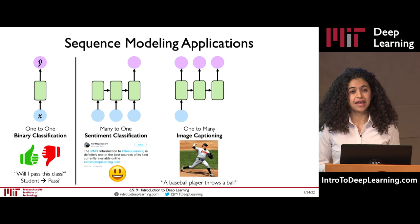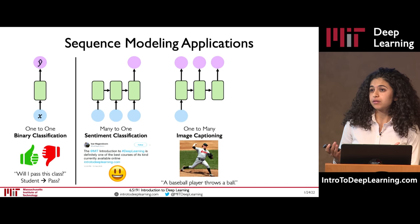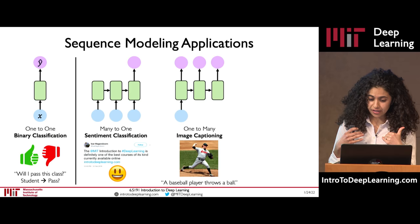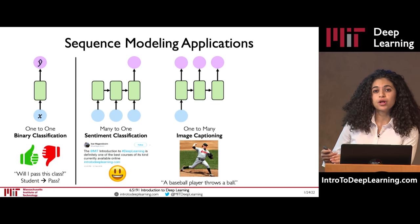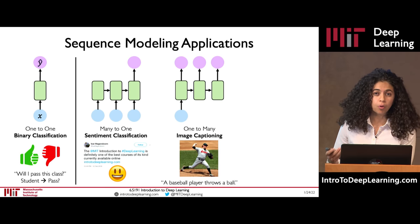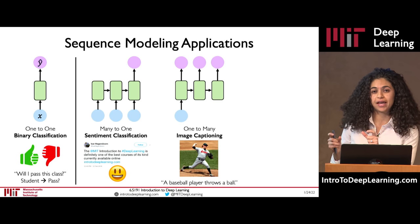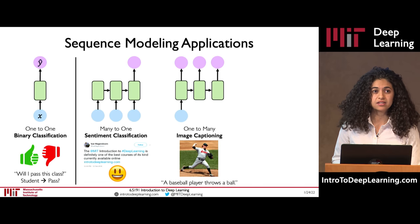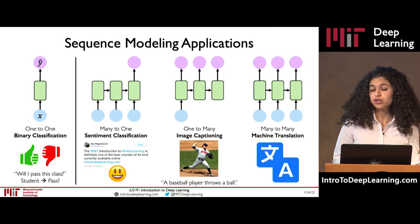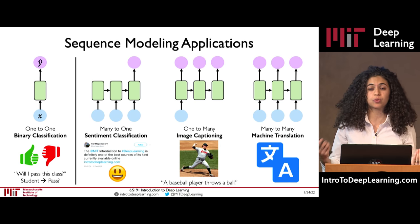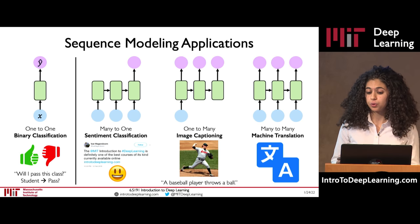We can also have a case where our input initially may not have a time dimension — for example, an image of a baseball player throwing a ball — but the output we want to generate has a temporal or sequential component, where we now want to caption that image with some associated text. And finally, we can have a case where we have a sequential input and want to map it to a sequential output, for example in translating text from one language to another.